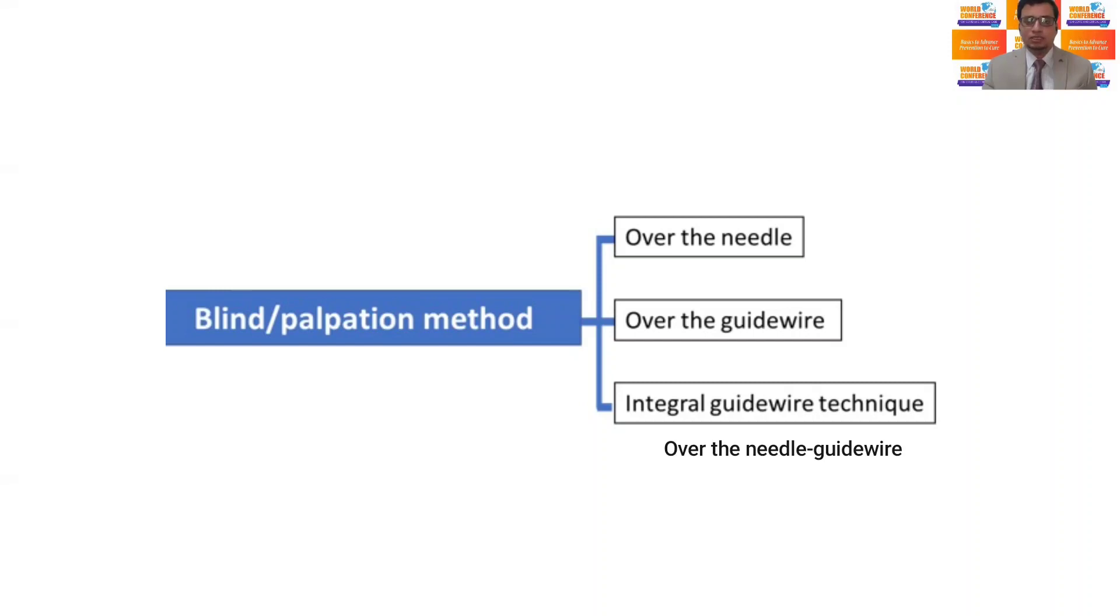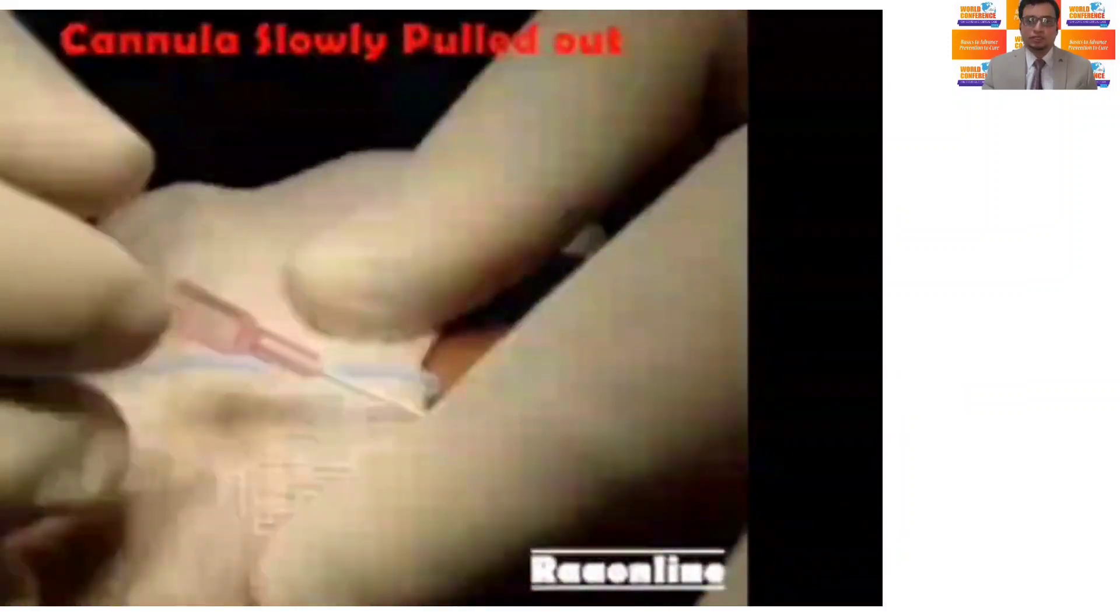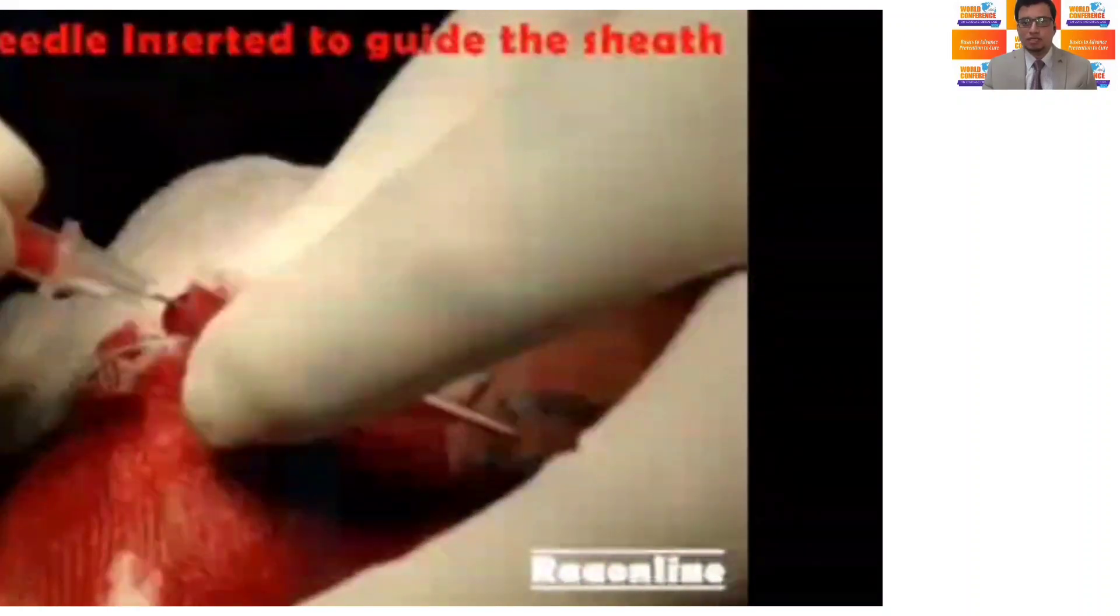Once there is a blood return, the needle is advanced slightly in over-the-needle technique further to ensure the catheter has entered the vessel. The needle angle is then lowered to 10 to 15 degrees and the catheter is guided over the needle and advanced into the vessel.